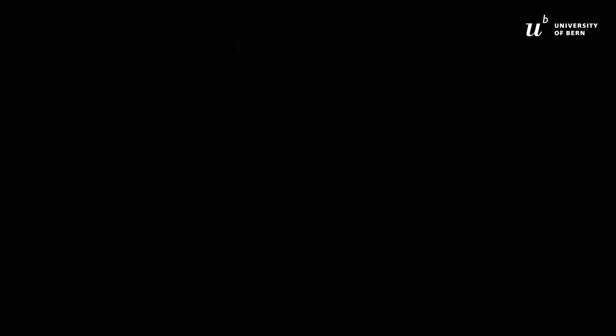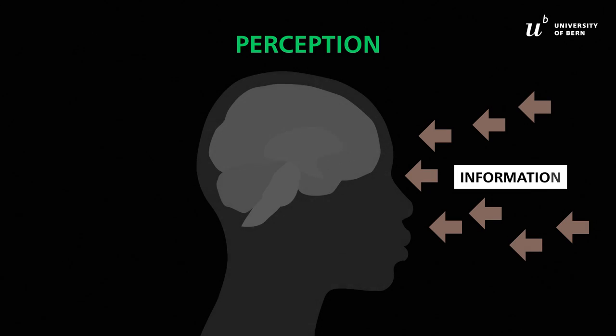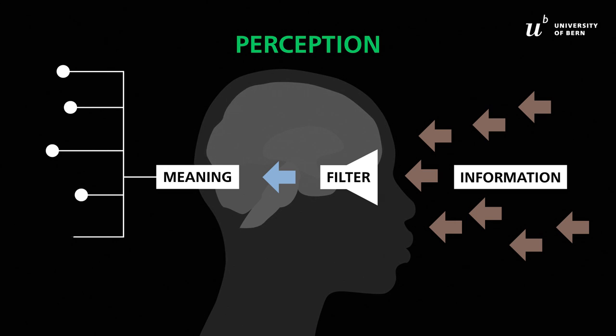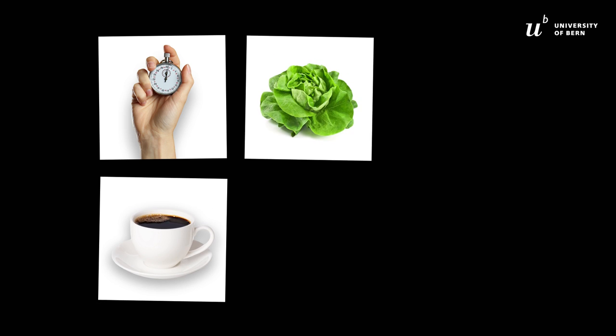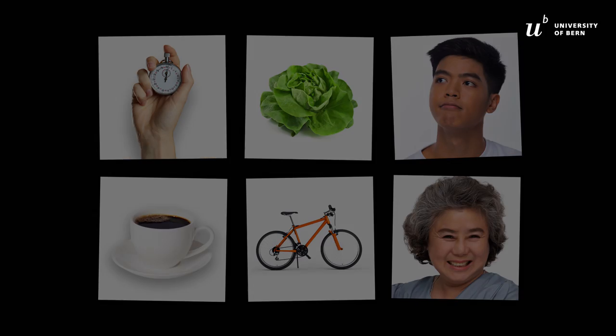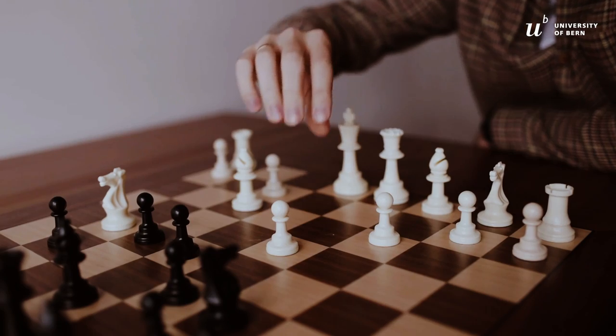What we are looking at right now is not the physical world — what we see is the result of our own perception. The process of perception is not bottom-up. We must constantly filter the incoming information and grasp the real meaning of the outside world. Perception takes place in real time. In the real world, we must act quickly and immediately, relying on our perception to rapidly identify and categorize objects, recognize people, know where we are in space, and guide our actions.